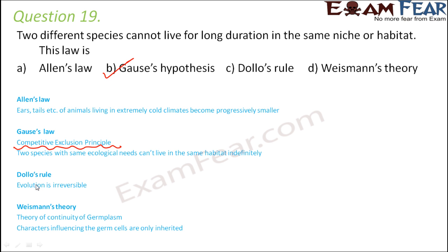Just for information: Dolo's rule states that evolution is irreversible — anything that happens in evolution cannot happen in reverse. For example, in human evolution, homo sapiens had apes as ancestors, but the reverse process is not possible. Wiseman's theory stated the theory of continuity of germplasm — that only characters influencing the germ cells are inherited, and acquired traits cannot be inherited.